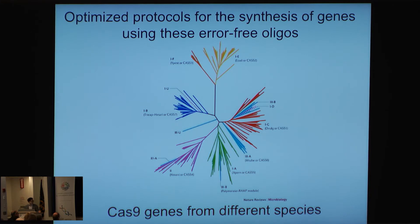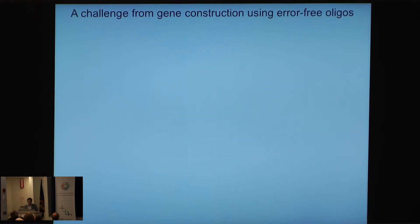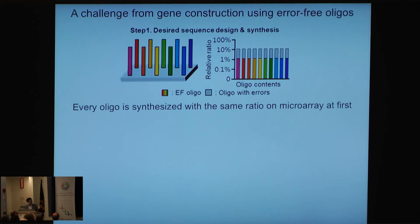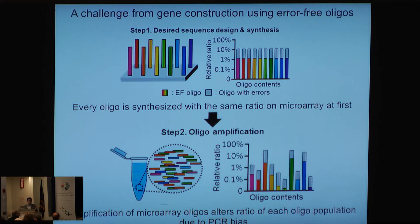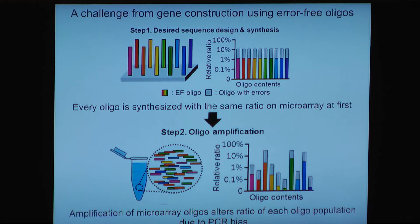As a test, we decided to use Cas9 genes from different species to demonstrate the technology. When we started this project, we immediately realized the challenge of constructing genes using error-free oligos — specifically, although every oligo on the microchip is essentially synthesized at the same ratio on the microarray at first, after we amplify the microarray library prior to subjecting it to NGS, we will have amplification bias.